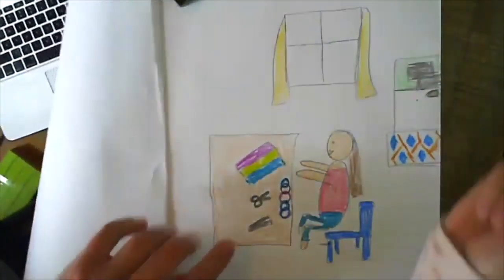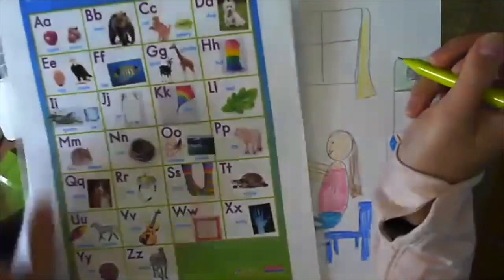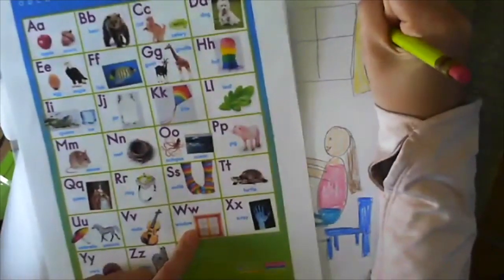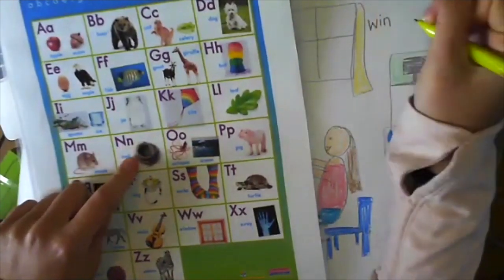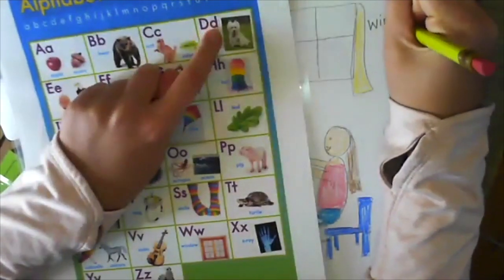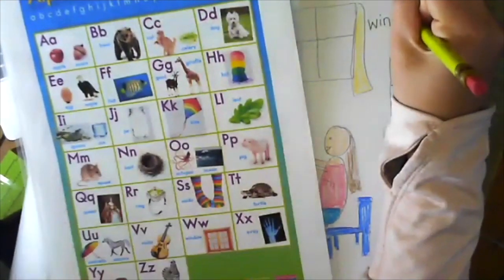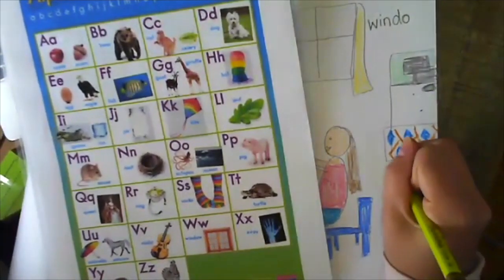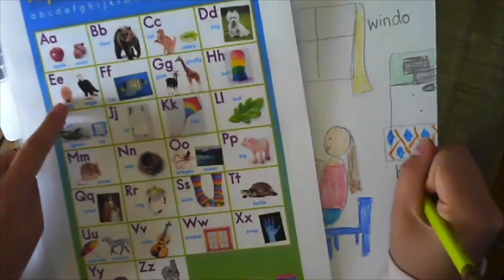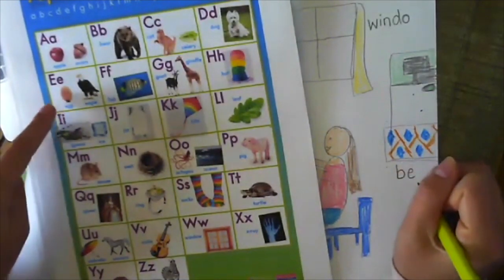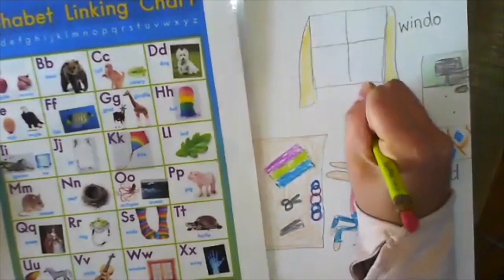And I can add some labels to my picture. Bed, B-E-D. I can write me, that's a sight word, M-E.